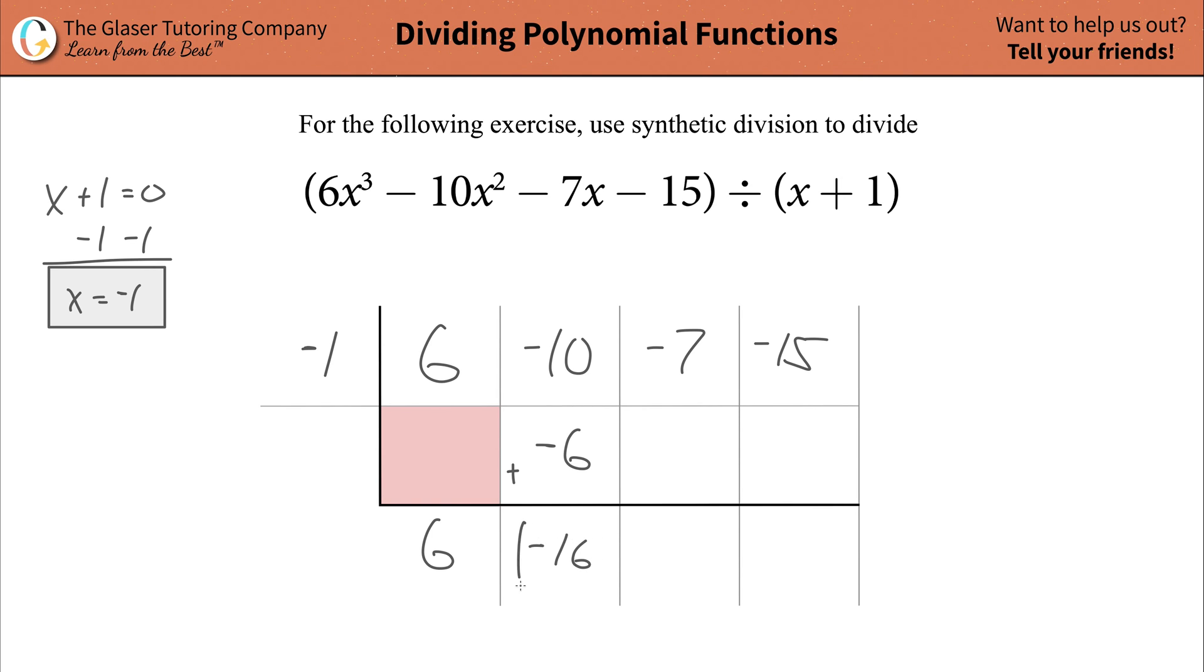Now what you're going to do is you're going to repeat the same step. Take this term, multiply it by this term, and plug in your answer over here. Negative times a negative is a positive, so that's a positive 16. You're going to add these terms together. So a positive 16 and a negative 7, what are you going to get? Sounds like a 9 to me, positive 9.